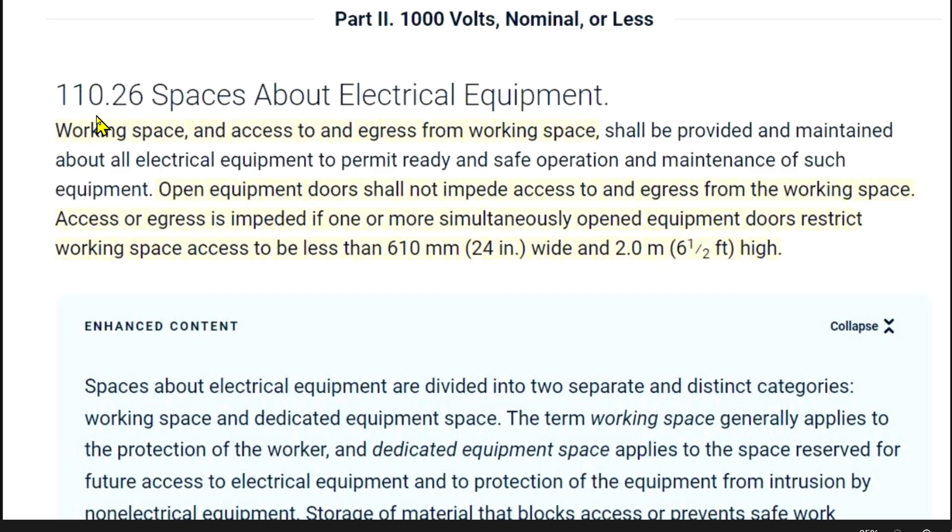Now for the topic of leaving workspace in front of your electrical panels, this is article 110.26, spaces about electrical equipment. Working space and access to and egress from working space shall be provided and maintained about all electrical equipment to permit ready and safe operation and maintenance of such equipment.